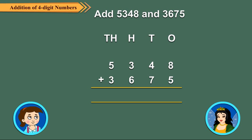Adding the ones. 8 ones plus 5 ones is equal to 13 ones, which is equal to 1 ten plus 3 ones. Carry over 1 to the tens column and write 3 under the ones column.